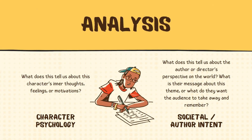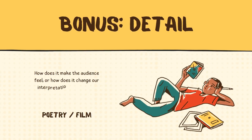Firstly, what does this tell us about the inner thoughts, feelings and motivations of this character? And secondly, what does this tell us about the author's perspective on the world? How do they think people behave in real life? What are they suggesting we should do in our own lives or be aware of as the audience? As a bonus, you can also add: how does it make the audience feel, or how does it change our interpretation of the text? This is more used to analyze poetic techniques or elements of a film — it's less relevant for novels and short stories.